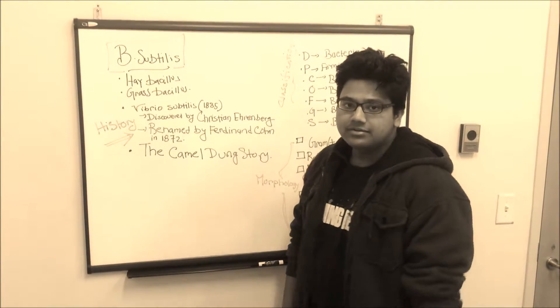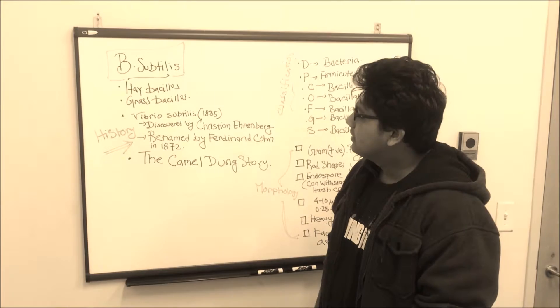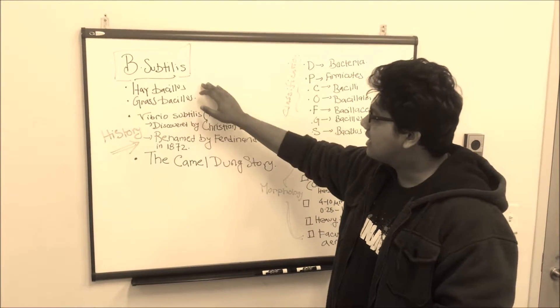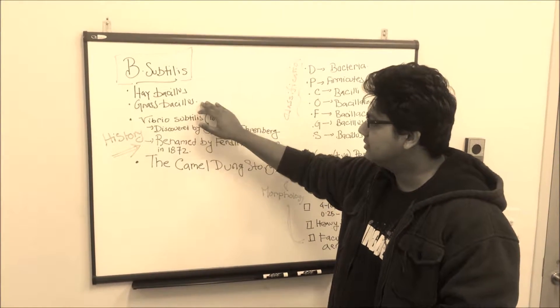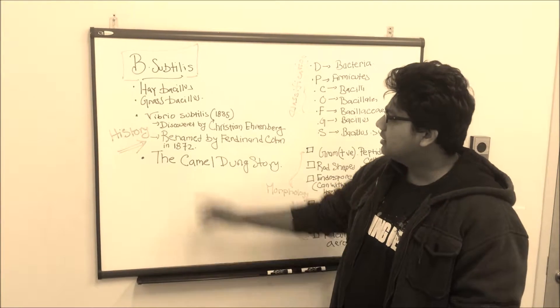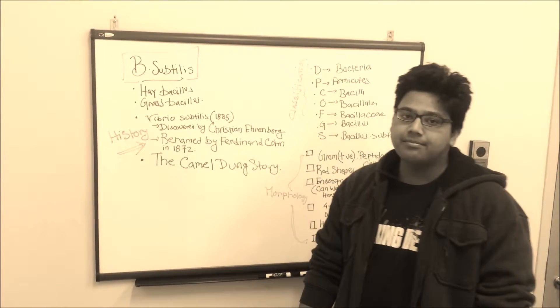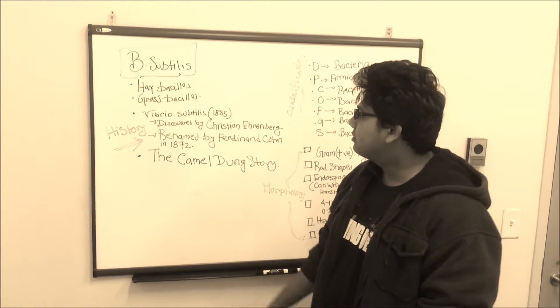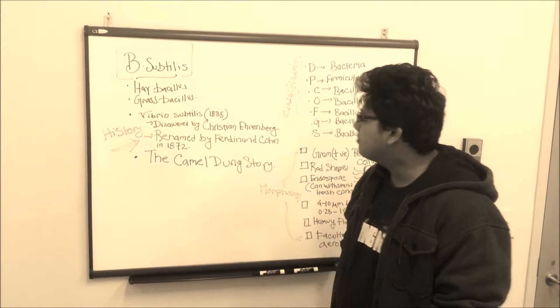First of all, I'm going to introduce you to B subtilis. B subtilis is also known as hay bacillus or grass bacillus, but historically it was once known as Vibrio subtilis in 1835 when it was first discovered by Christian Ehrenbart.